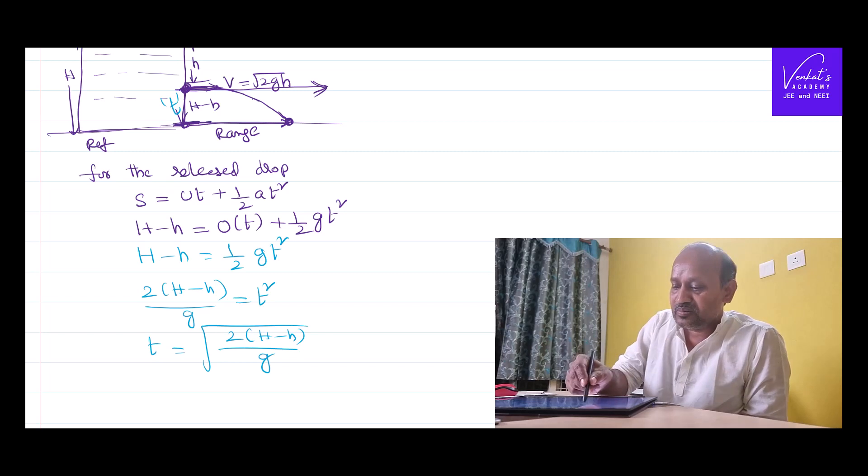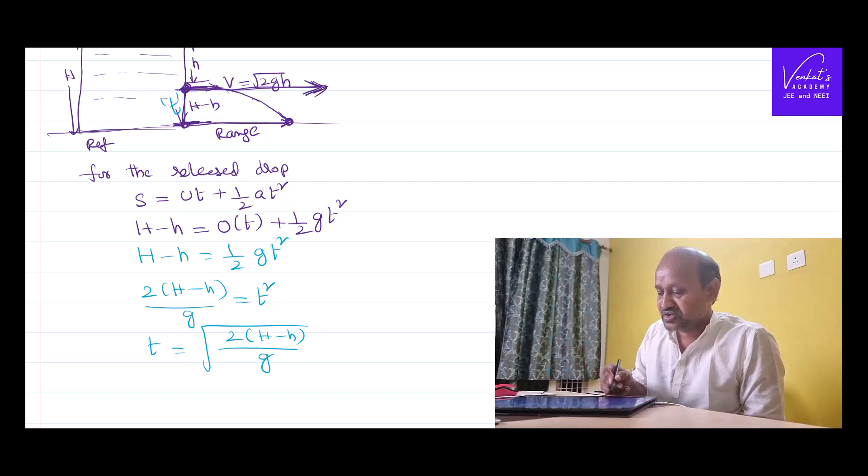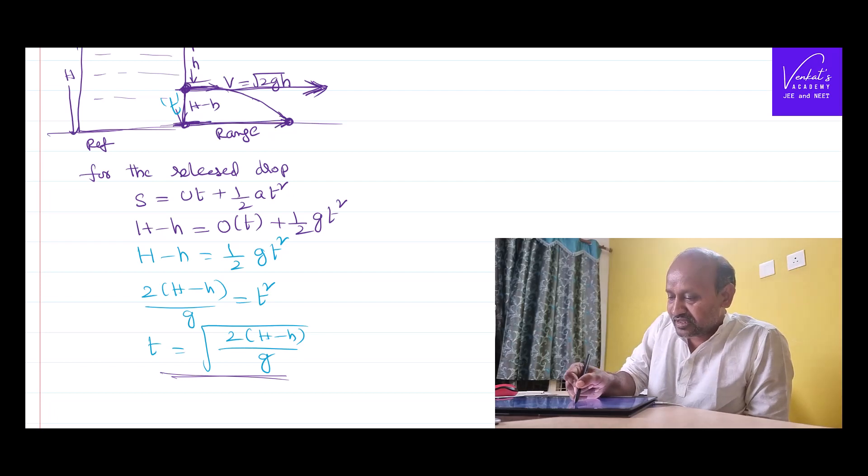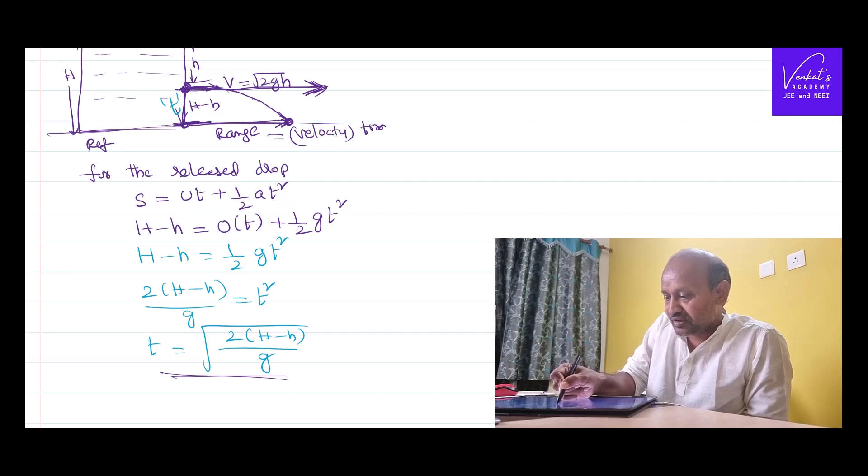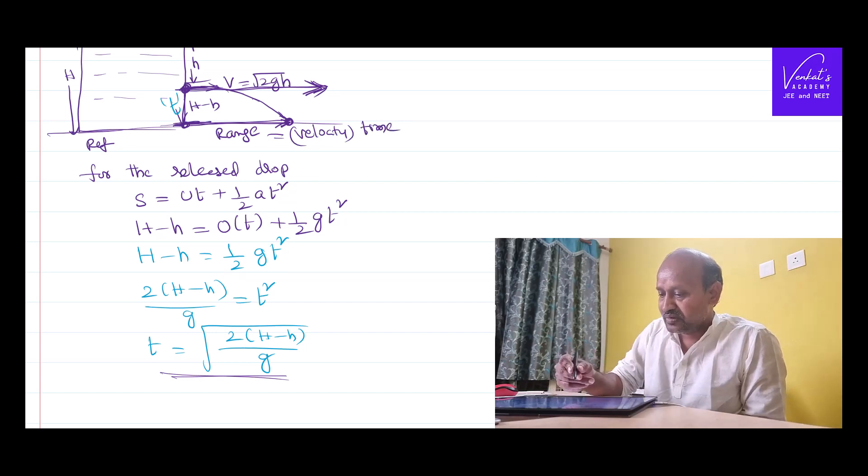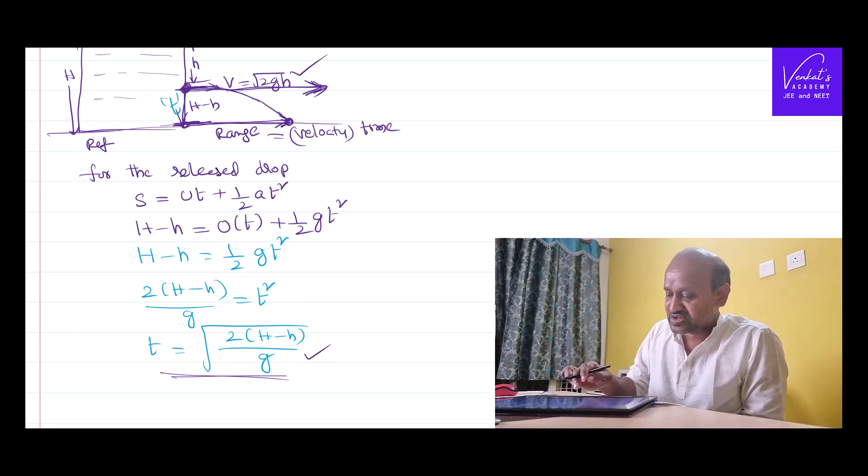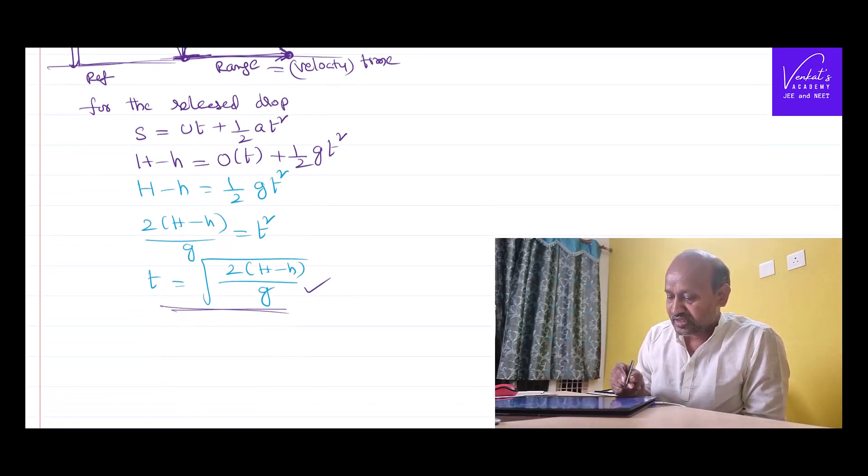Now, we know the velocity is root 2gh and we also know the time. I can calculate this range. Range is nothing but horizontal distance. Simple formula: distance equals velocity into time. We know velocity and time. Just substitute both of them. The range is V into T.